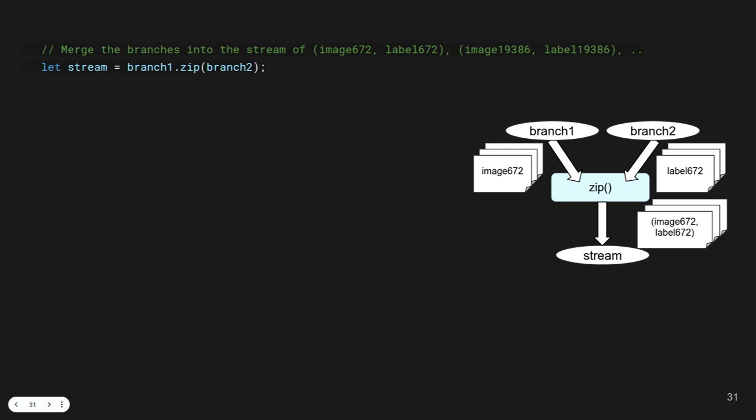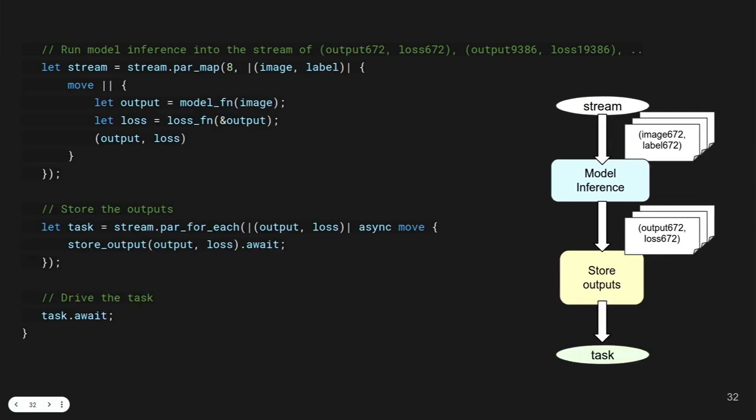After loading images, use `broadcast` to split the work: `branch1` handles image augmentation, `branch2` handles bounding-box correction. These two run simultaneously in parallel. After both finish, `zip` them back together. Then the combined result goes to the model for inference — object detection, tracking, etc. If you have multiple GPUs, you can parallelize here too: four GPUs means four times the throughput. Finally, IO again to save results.